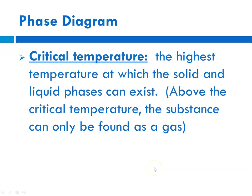So the critical temperature is defined as the highest temperature at which the solid and liquid phase can exist. So above that critical temperature, the substance would only be found as a gas.